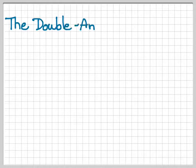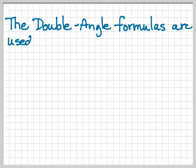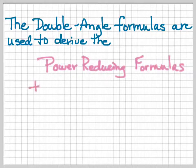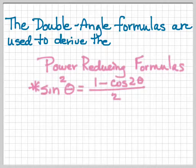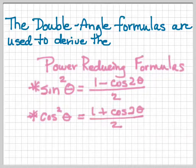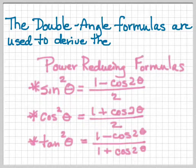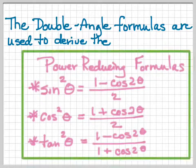All right, so let's take a look at this. The double angle formulas are used to derive the power-reducing formulas. The power-reducing formulas are: sine squared theta equals 1 minus cosine 2 theta over 2, cosine squared theta is 1 plus cosine 2 theta over 2, and tangent squared theta is 1 minus cosine 2 theta over 1 plus cosine 2 theta, which you can see because tangent is sine over cosine. So that's the first group you need to commit to memory.